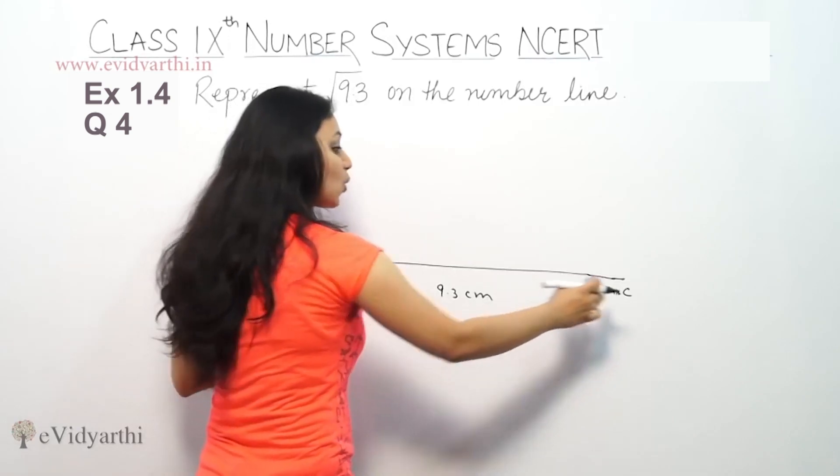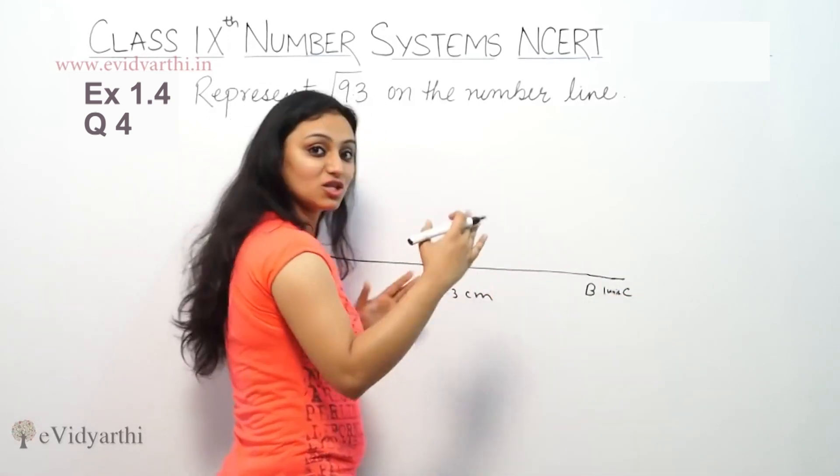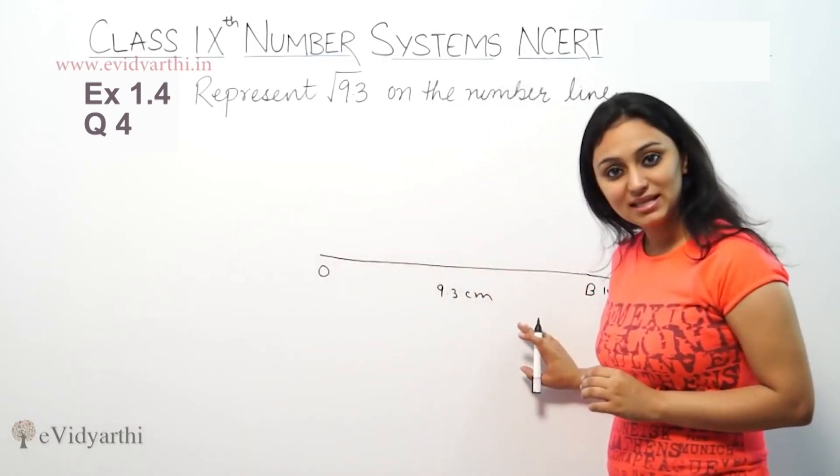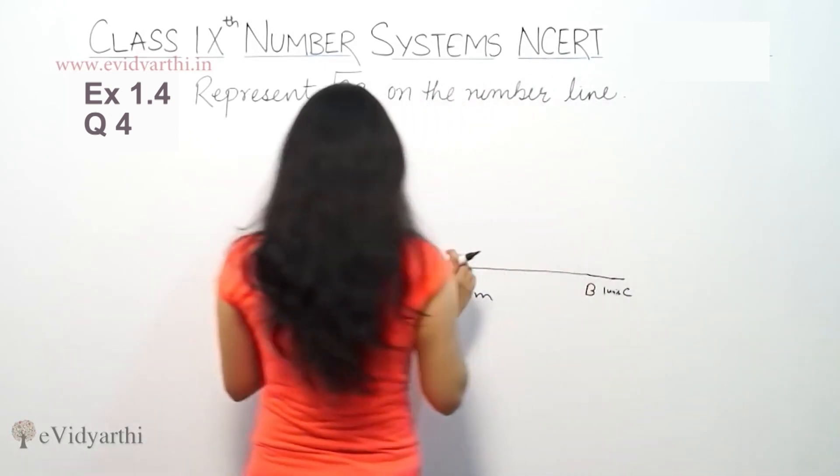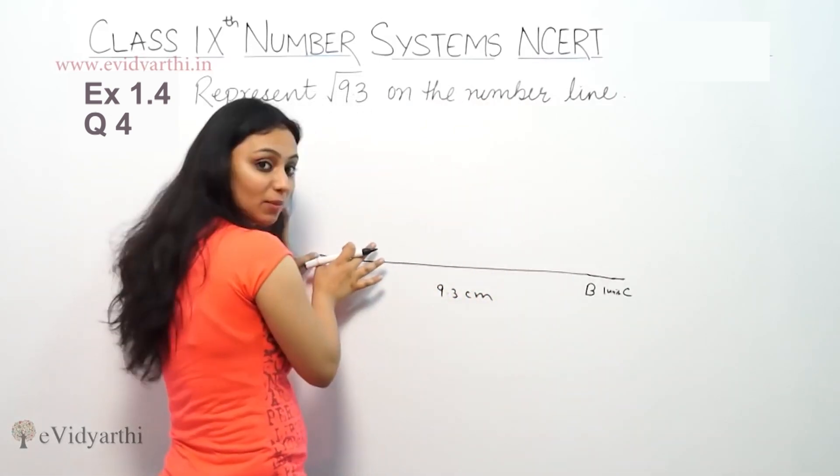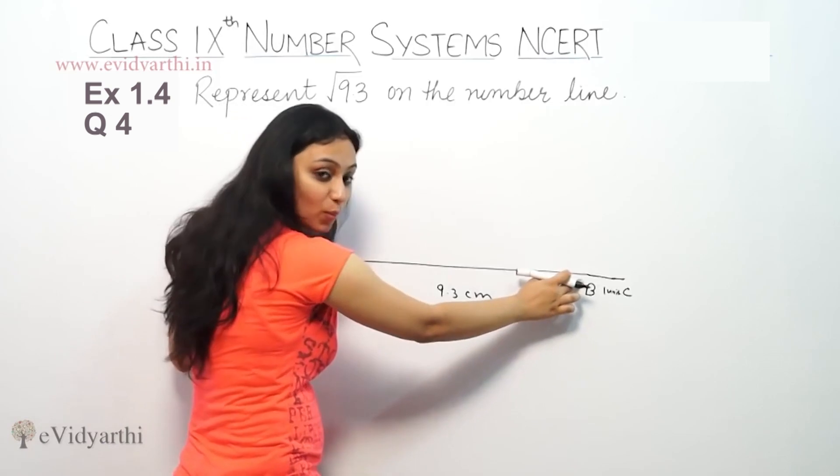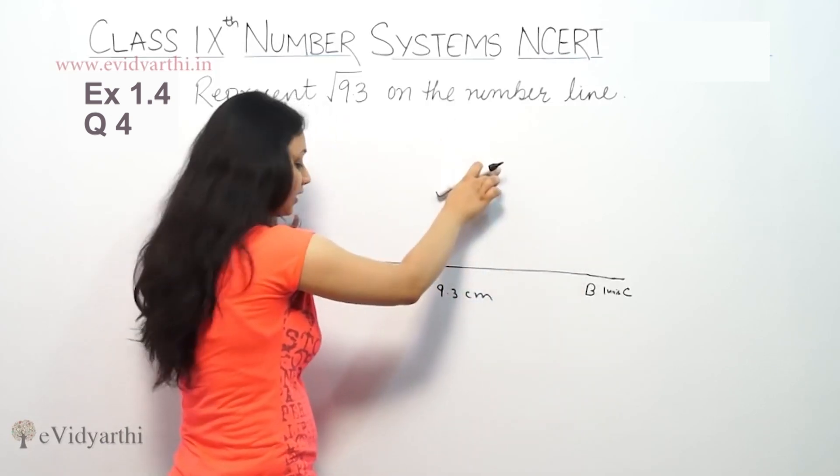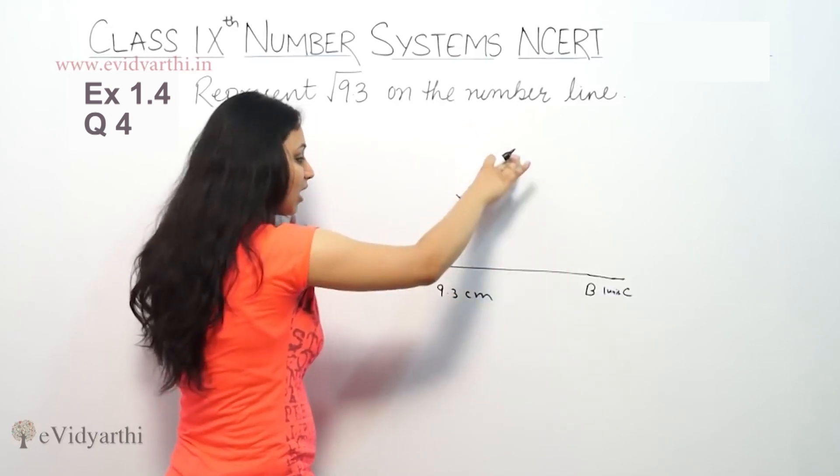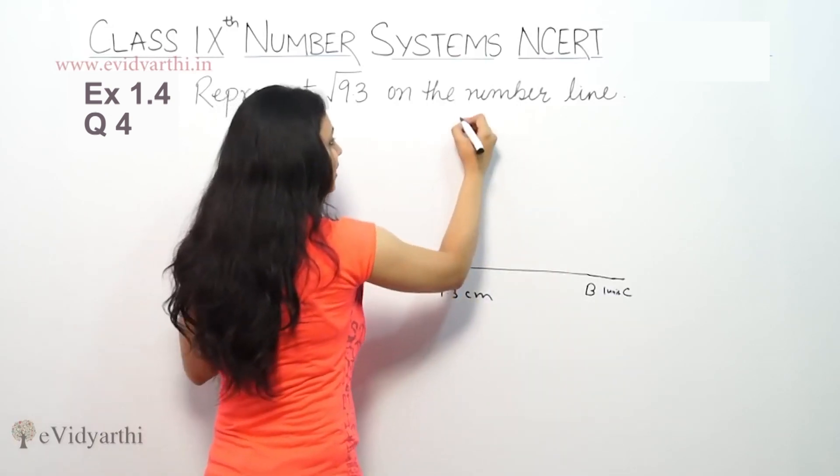Now find the midpoint of OC. To find the midpoint of this OC line, we will draw its perpendicular bisector. For the perpendicular bisector, put the pencil in the compass. Place the compass here, open it more than half, and make a cut above. Place the compass here, open it more than half, and cut here. Suppose it cuts here, then place it here and cut.